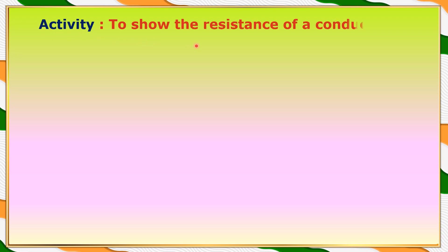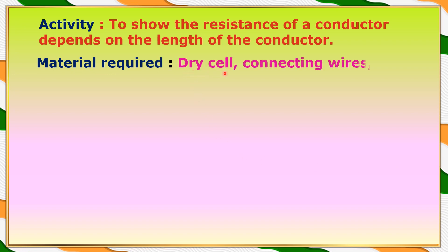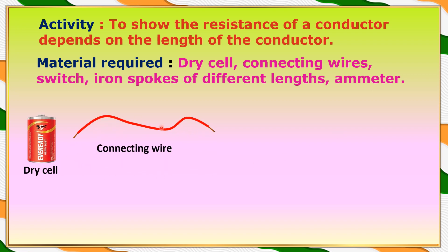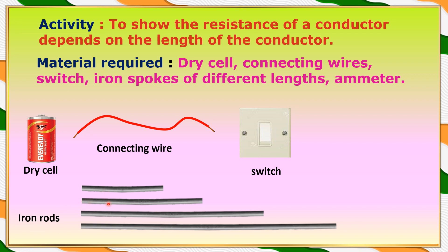Here is the activity — to show that the resistance of a conductor depends on the length of the conductor. The materials required are: a dry cell, connecting wires, a switch, iron spokes of different lengths, and an ammeter. All these iron spokes have the same cross-sectional area, but their lengths are different.